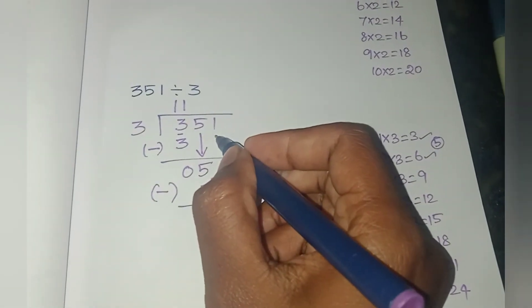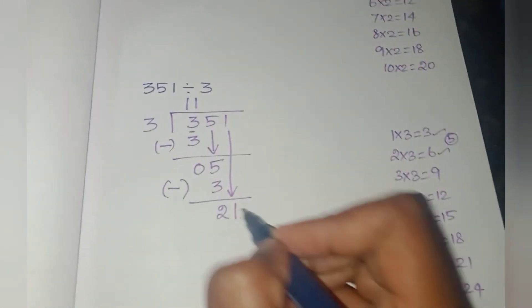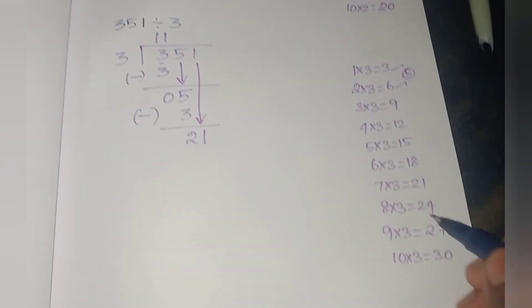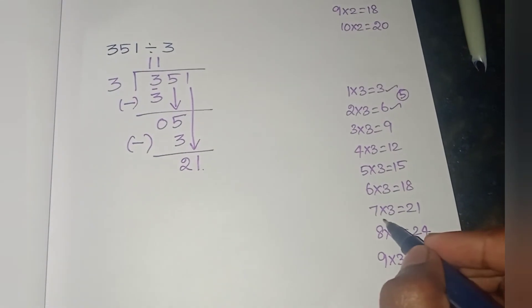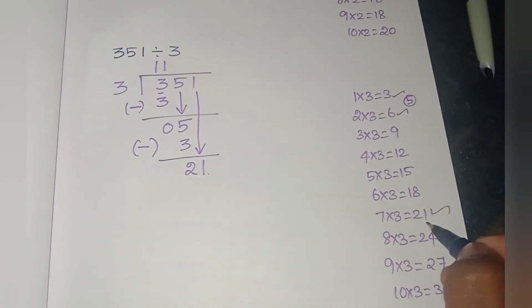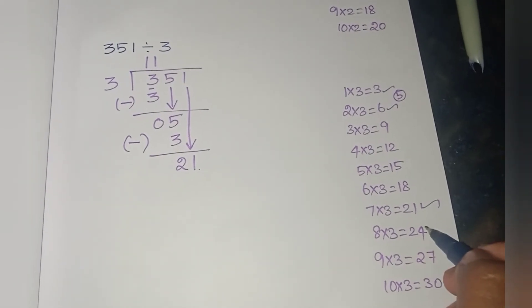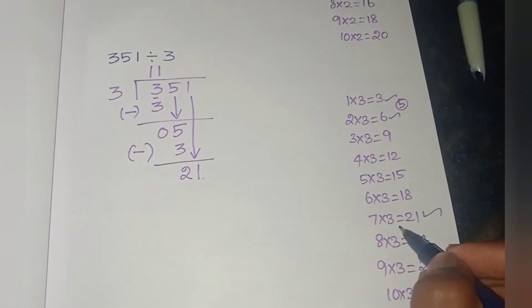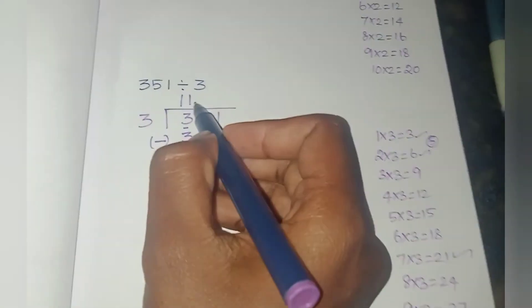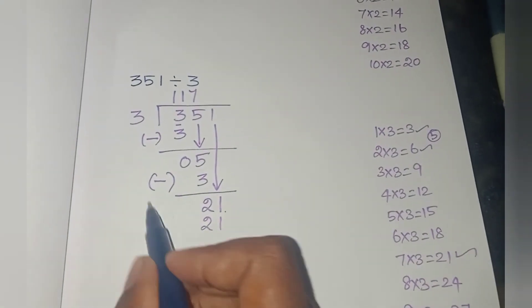Next, there is another digit. You have to bring down the next digit. Then check the third table — how many 3s are 21? 7 into 3 is 21. So 3 into 7 is 21.